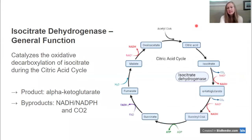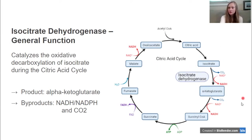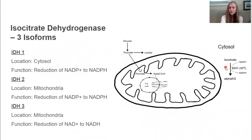Isocitrate dehydrogenase is an enzyme familiar from the citric acid cycle. It catalyzes the oxidative decarboxylation of isocitrate and produces alpha-ketoglutarate, as well as NADH or NADPH and carbon dioxide as byproducts. There are three isoforms of isocitrate dehydrogenase, and they differ regarding their location and the electron carrier that they produce as a byproduct.